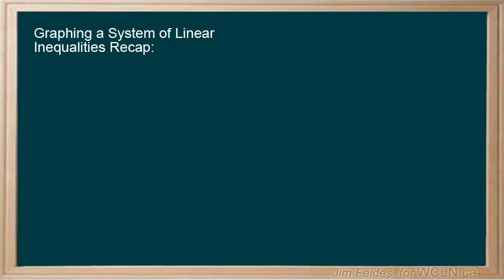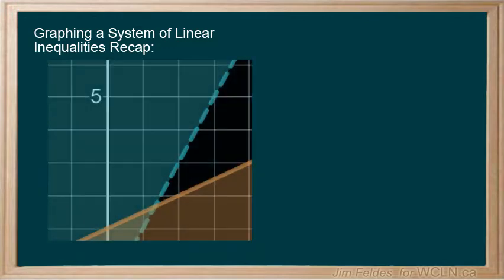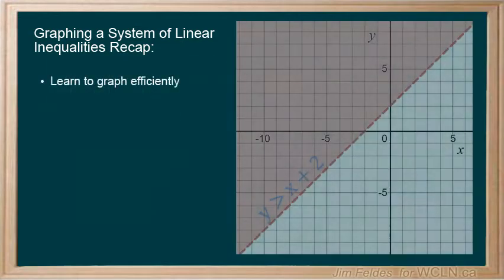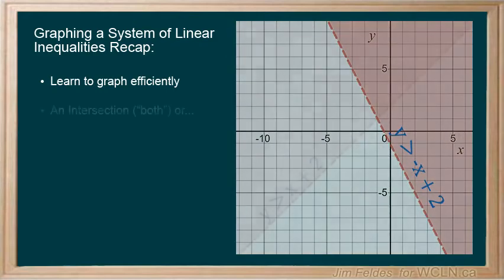We discovered with systems of linear inequalities that graphing is the only way to realistically find our solutions. We made sure we were able to graph the inequalities efficiently and then identified the desired solution as likely an intersection that only included values from both